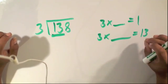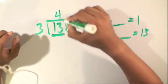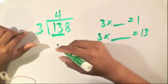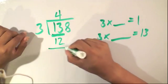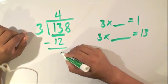So, our perfect fit is actually 4, we'll write it on top of 3, and we'll multiply 4 times 3, which is equal to 12, and then subtract 13 and 12, and we get 1.